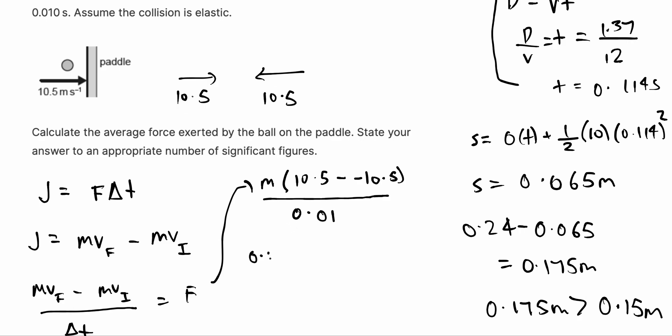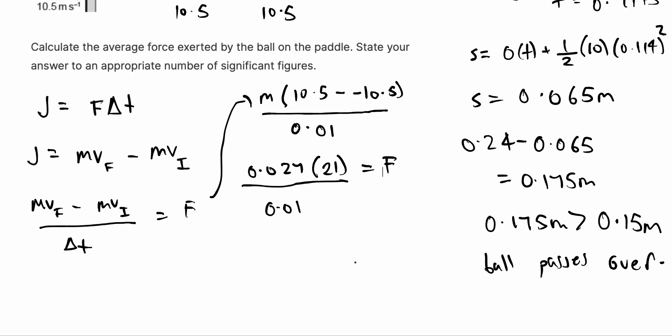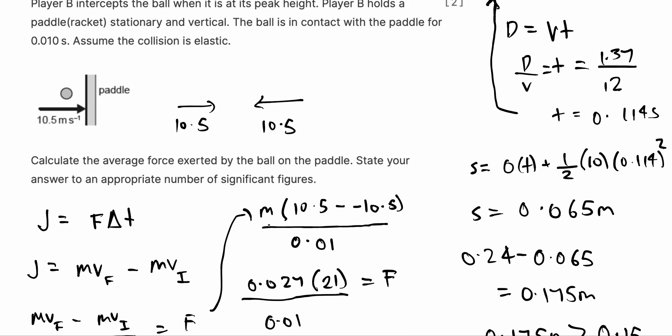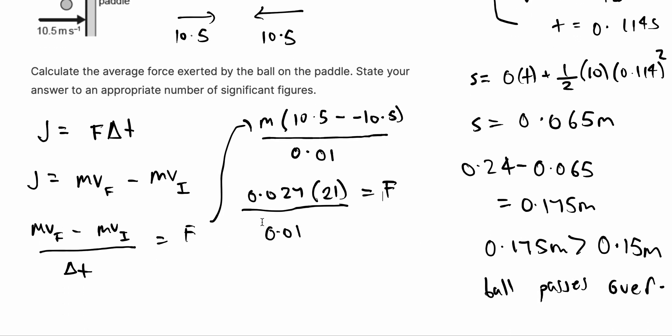Over the change in time, which we get is 0.01. So substituting everything in, mass is 0.0027, multiply it into 21, over 0.01, gives us the force. Putting this on our calculator, we get 0.027 times 21, and we get the final answer to be 5.67. And that's your final answer.